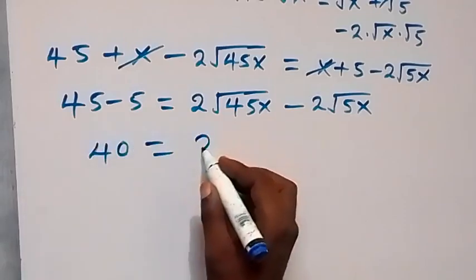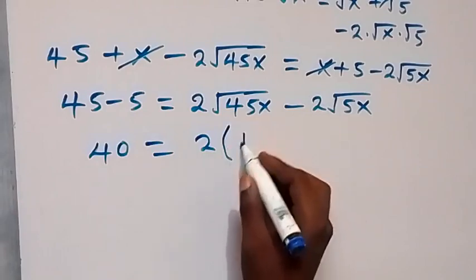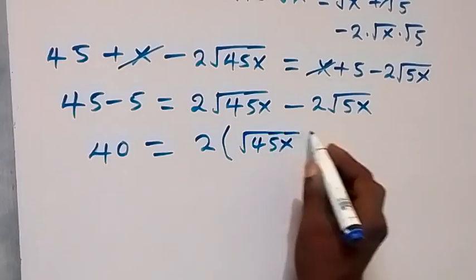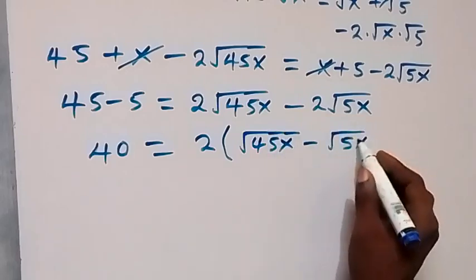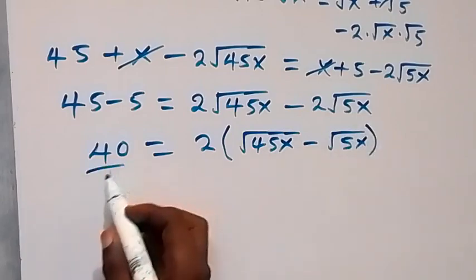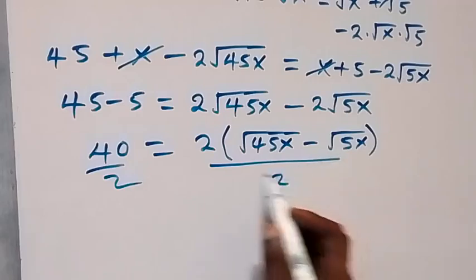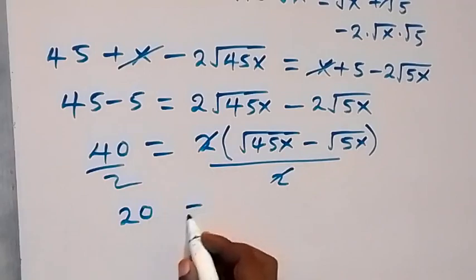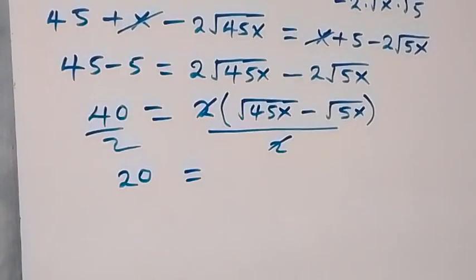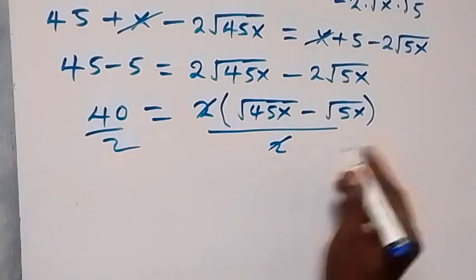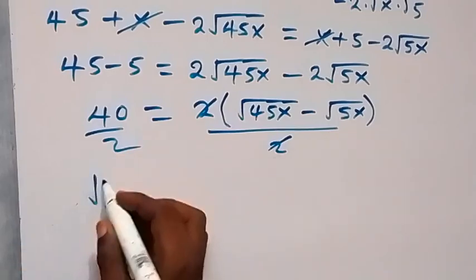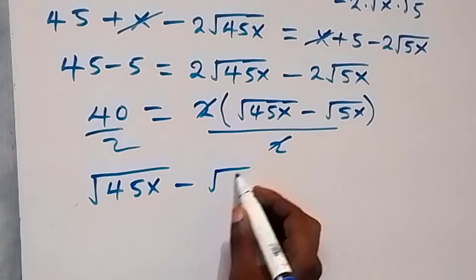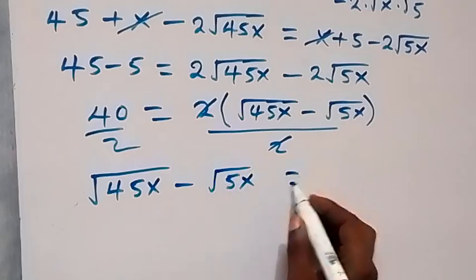So 40 equals 2 times (root 45x minus root 5x). When we divide both sides by 2, the 2 cancels out and we have 20 equals root 45x minus root 5x.